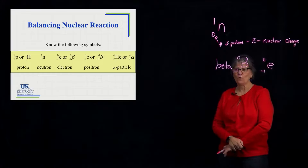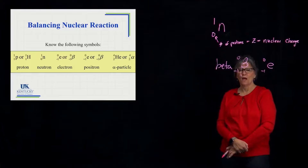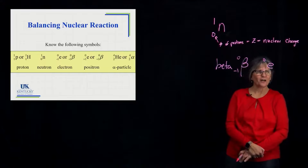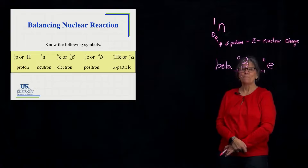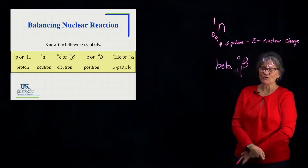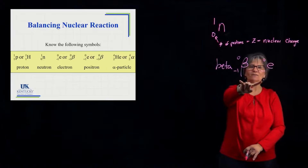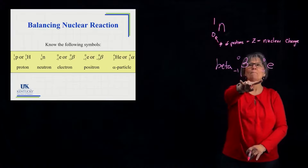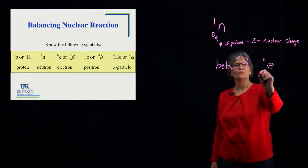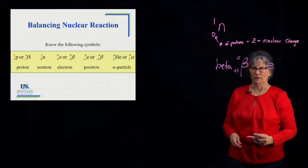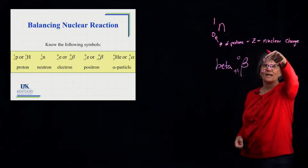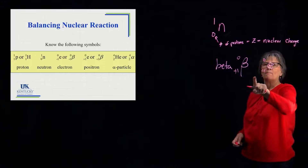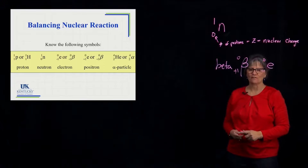Something we haven't seen before is a positron. A positron is exactly like an electron in mass, except it carries a positive charge. Its symbol looks like the electron symbol, but we replace the negative one with a positive one. It has no protons and neutrons, so it carries no mass number, but it carries a charge of positive one.